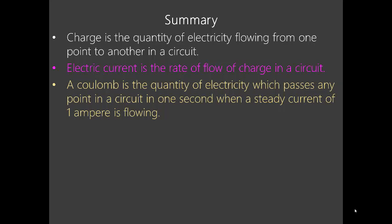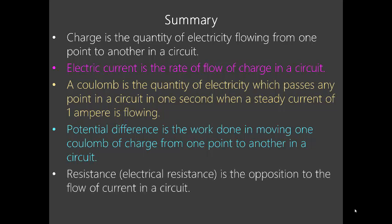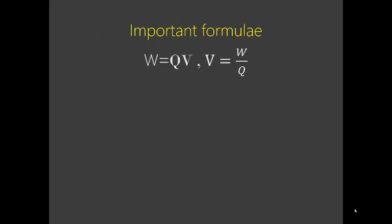When we say a current of one ampere is flowing, we went ahead and defined the potential difference as the work done in moving one coulomb of charge from one point to another in a circuit. And we said electrical resistance, which we call resistance, we defined it as the opposition to the flow of current in the circuit. We also had some important formulae — one was the work done or energy expended when current is flowing — and we talked about it as the product of the charge and the voltage or PD. Remember, this can be written as Q, because Q equals IT, so you can write it as VIT.